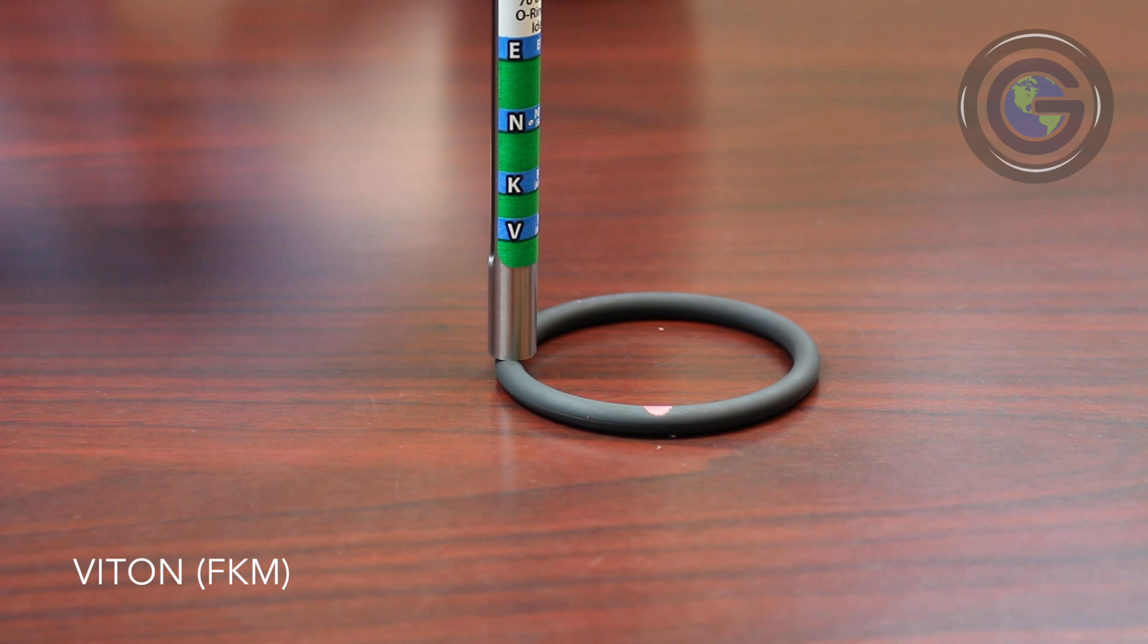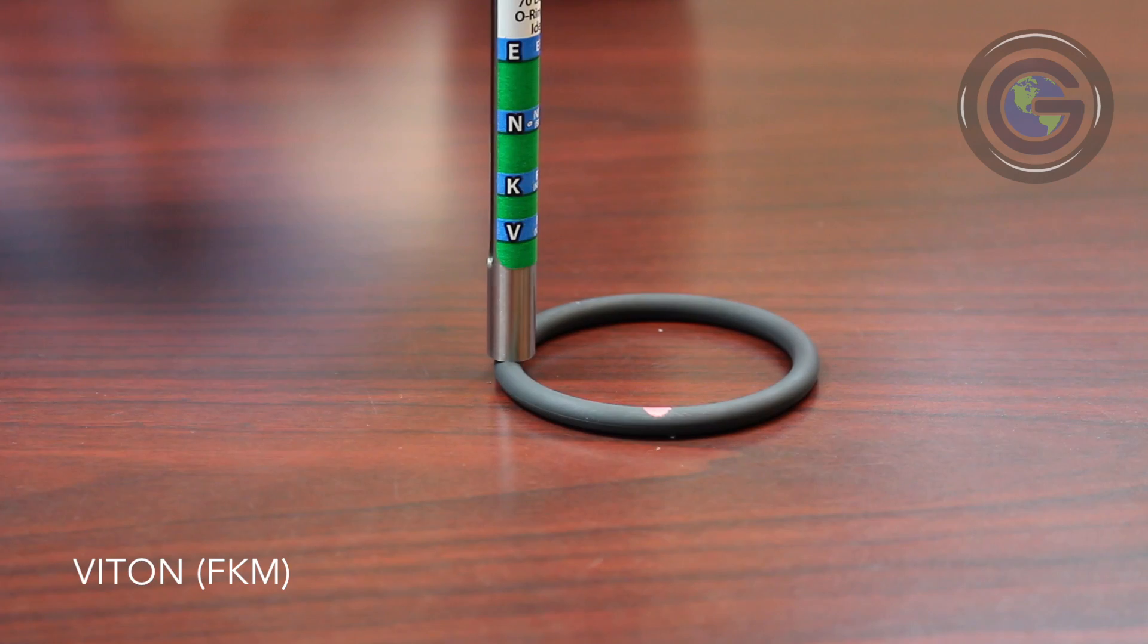On a Viton O-ring, there is little to no bounce at all, as the weight will simply drop all the way to the bottom V-mark.